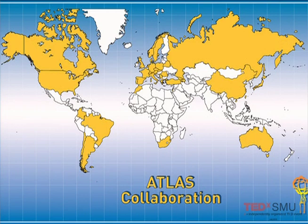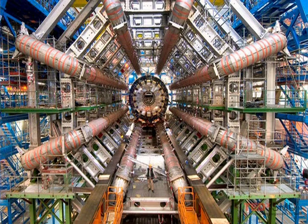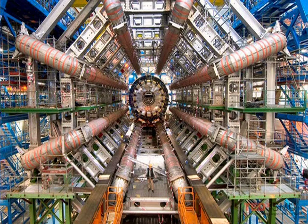In order to measure those objects and figure out if there is something new that we haven't seen before, we had to build a detector. This is a map of countries which are involved in the ATLAS collaboration — about 3,000 scientists, about 1,000 graduate students from all over the world. We built a detector which is quite large — a footprint of half a football field, eight stories high, and it's full of sensors. This is the early installation, and you can see the engineer standing three stories above the ground level, and then you fill it up with the detectors.